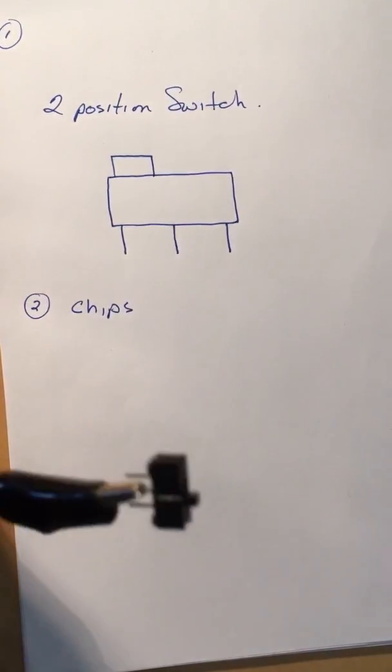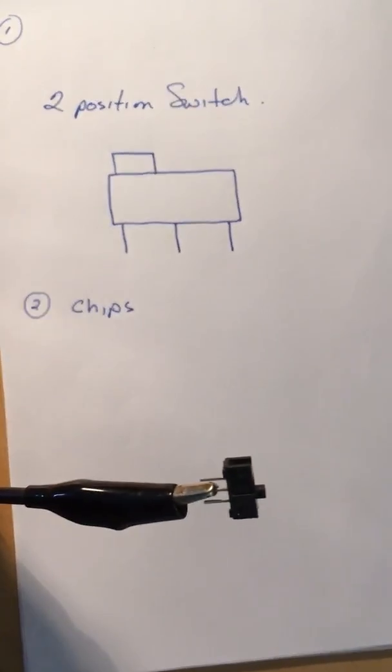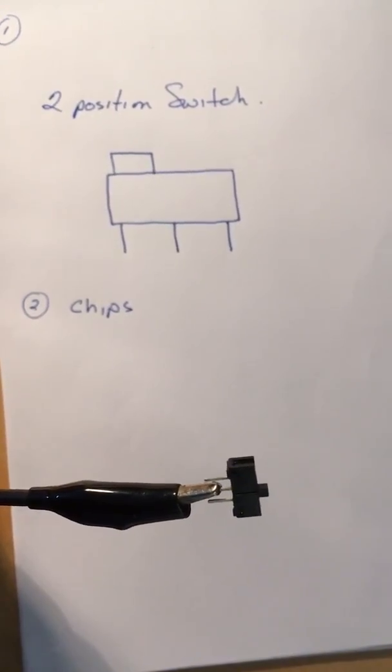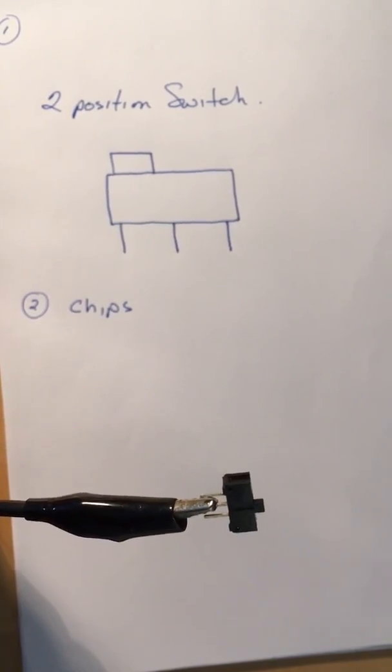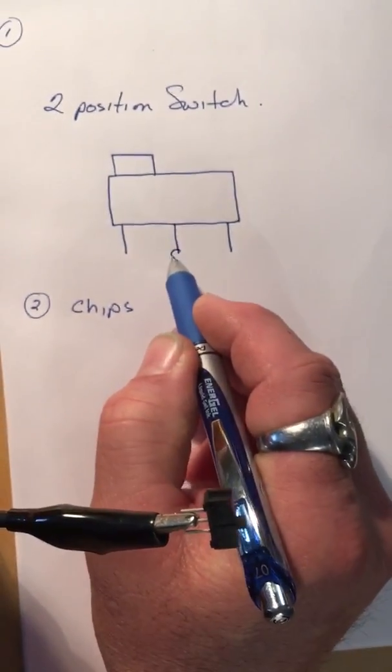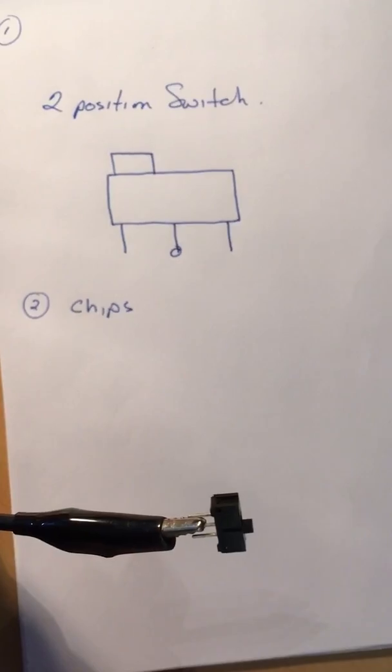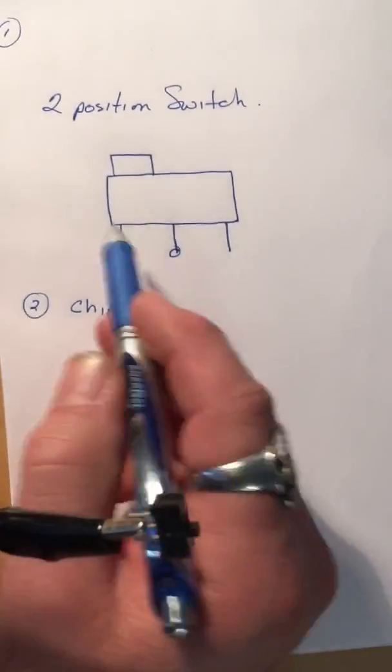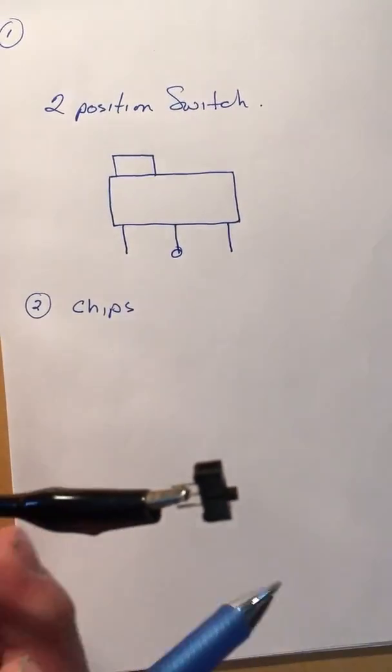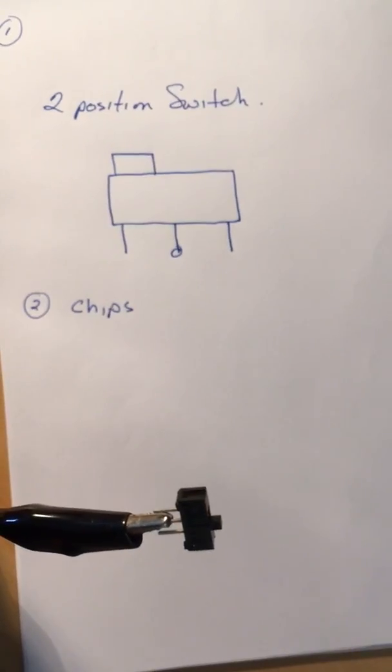It's got three terminals and you can see I've got my meter that's connected to the middle terminal. That's because the middle terminal here is the common pin to these other two pins. So it's just a switch if you were to think of a regular light switch.